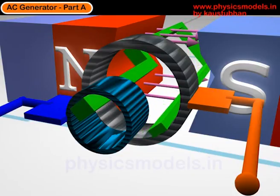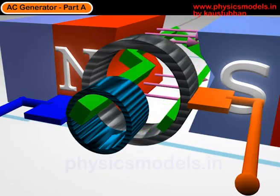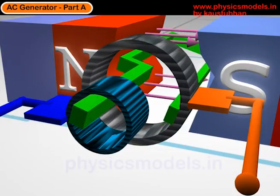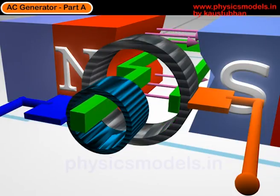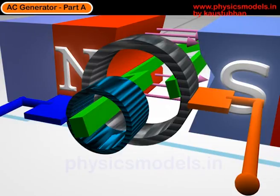What's important to see here is that the slip rings are continuous. They are not having any gaps, as we saw in the case of the commutator in a DC motor.